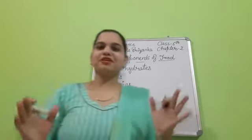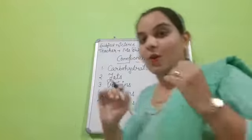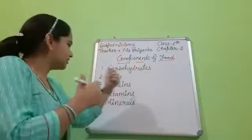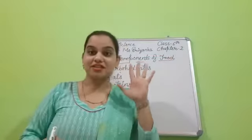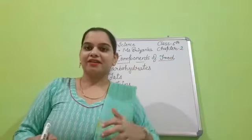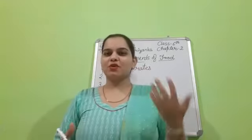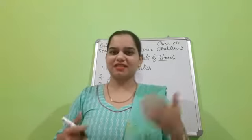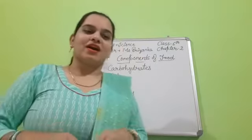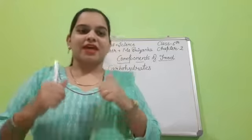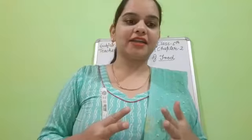So students, today we will discuss about these five components of food. What are these? These are carbohydrates, fats, protein, vitamins and minerals. These five components we will read again in this class. I hope something you have learnt in your previous class and some new things you will learn in this class. Now let's start our chapter. In this chapter, we study about the great variety of food items.